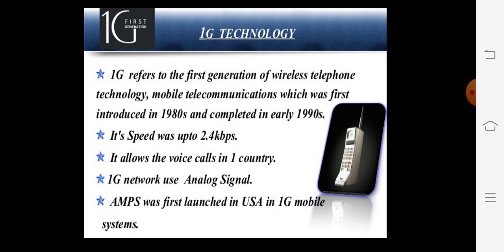Coming to the features: the 1G speed was up to 2.4 kbps. It allowed voice calls within one country and used analog signals. AMPS was first launched in the US as a 1G mobile system.